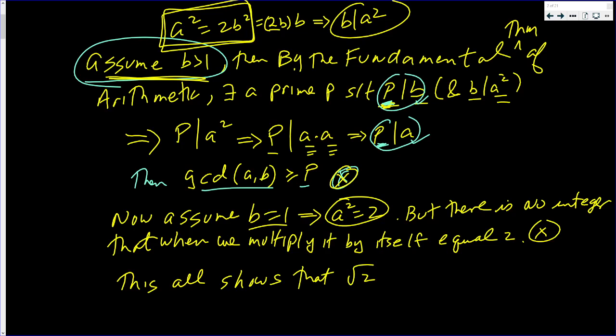Combining this all shows that the square root of 2 cannot be written as the quotient of 2 integers. Well, by definition, this means the square root of 2 is not rational. It is irrational.